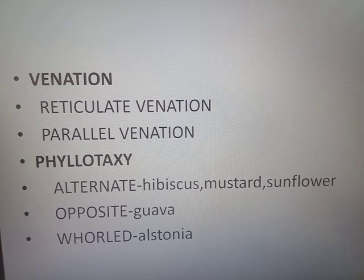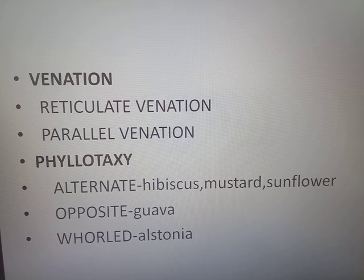The arrangement of the ribs — the venation, as it is known — is of two types: reticulate venation and parallel venation. Reticulate venation is the feature of dicot plants, and parallel venation is the feature of monocot plants.